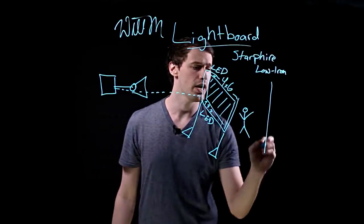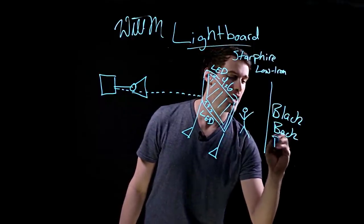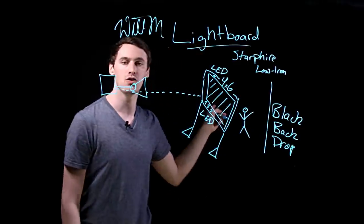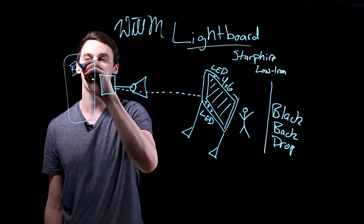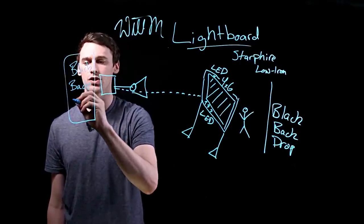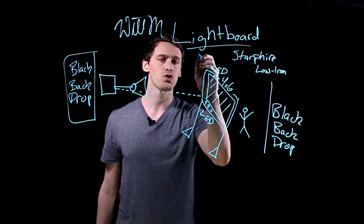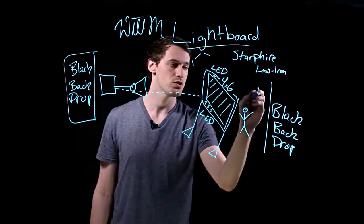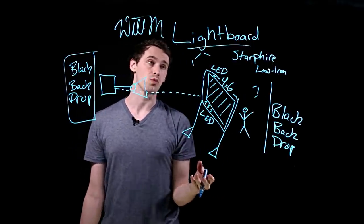Obviously, we also have a black backdrop behind myself right here, as well as behind the camera, we have another black backdrop. And this just prevents reflections and things like that. So that's your black backdrop on both sides. And then of course, we have some lighting to actually light all this stuff up, light me up. But that's basically how the lightboard works.